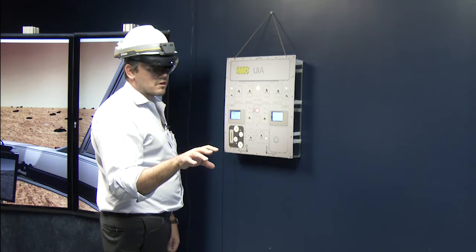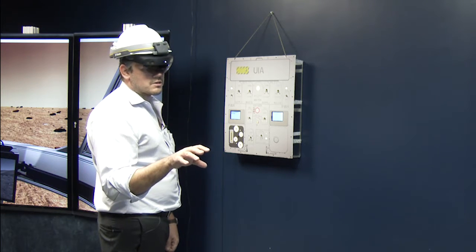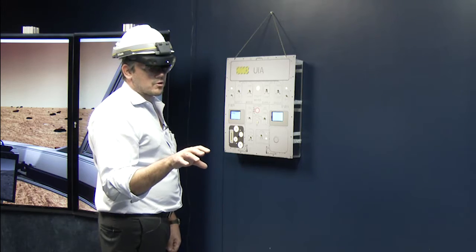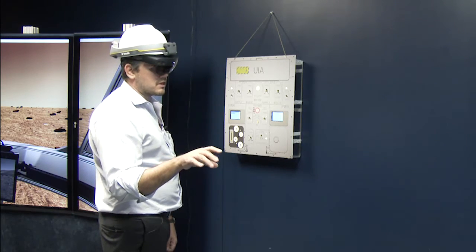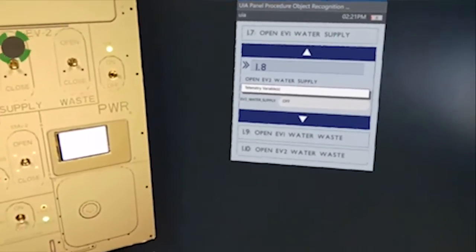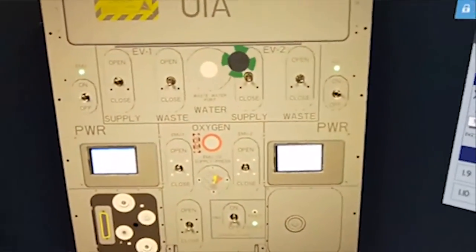Another thing that the program and software can support is actually taking pictures and videos and getting different files and uploading that into the actual procedure itself. So, it's telling me I'm on 1.8. Open the EV2 water supply valve. Again, it's highlighted.